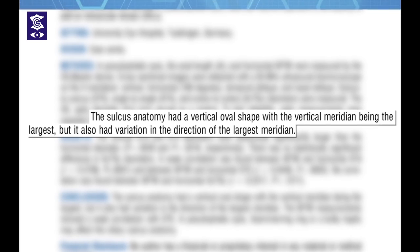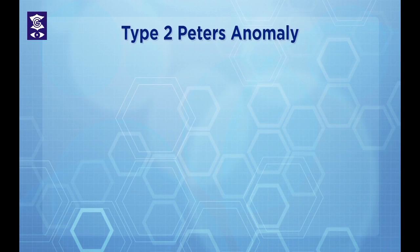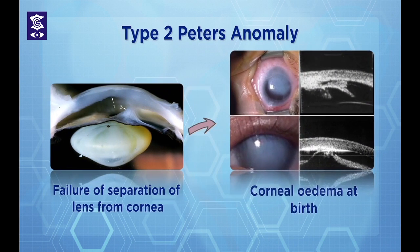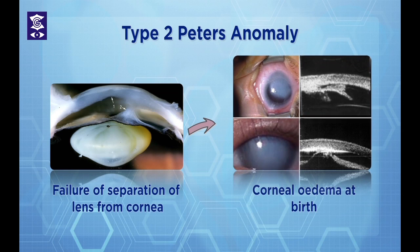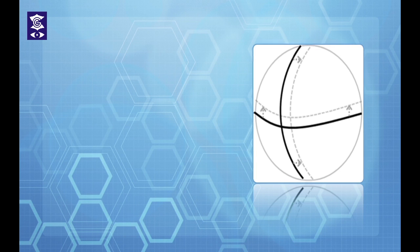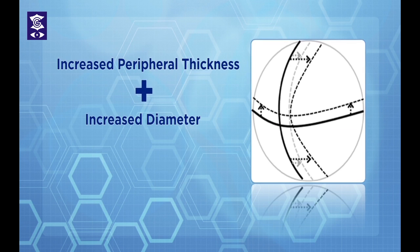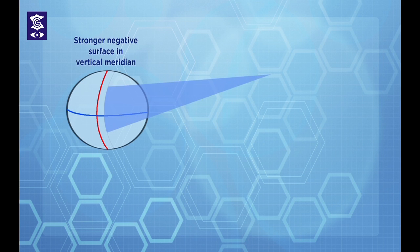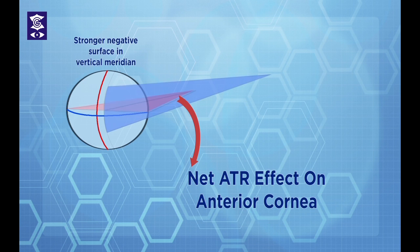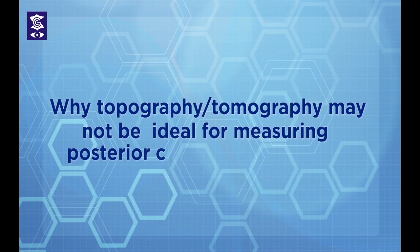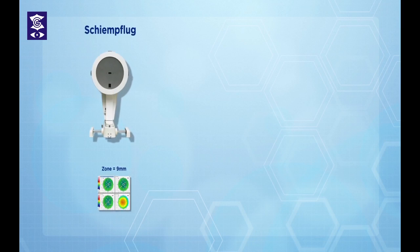This theory also corroborates with sulcus-to-sulcus measurements, which have been shown to be greater in the vertical compared to the horizontal meridian. Indirect evidence comes from type 2 Peters anomaly, in which there is failure of separation of the lens from the cornea, leading to keratolenticular adhesions and corneal edema at birth. Thus, both factors — increased peripheral thickness and increased diameter in the vertical meridian — when combined, contribute to making the posterior cornea a comparatively stronger negative surface in the vertical meridian, hence exerting against-the-rule astigmatism on the anterior cornea.